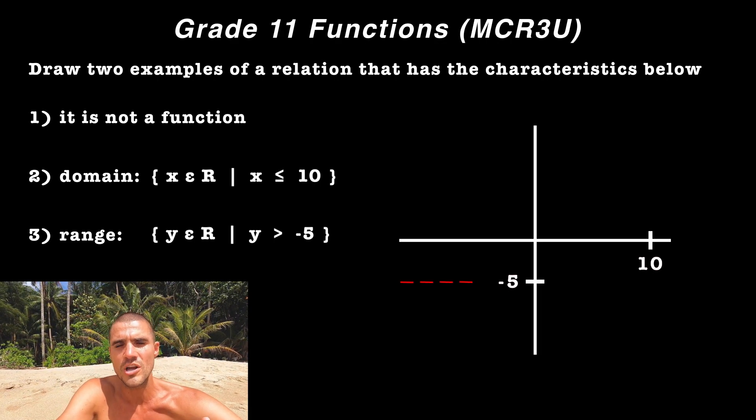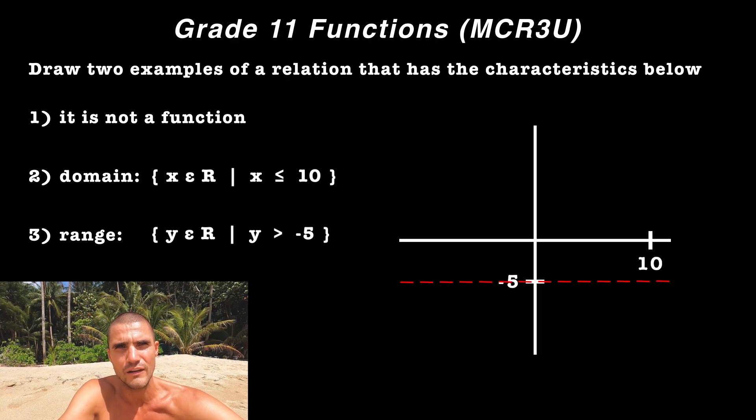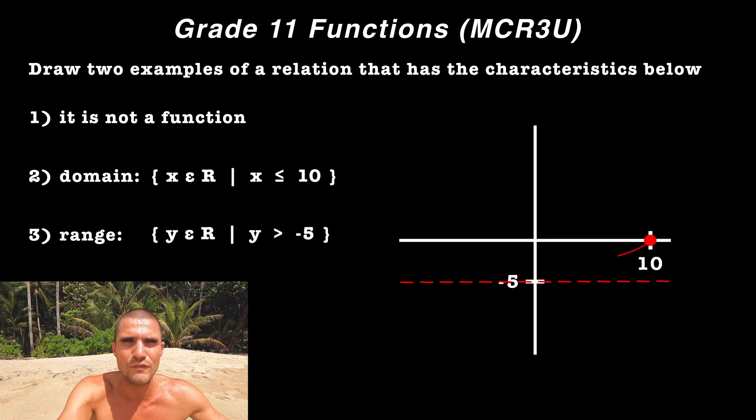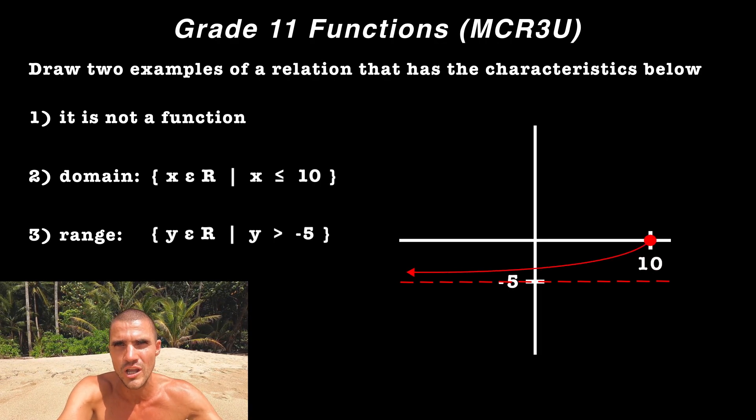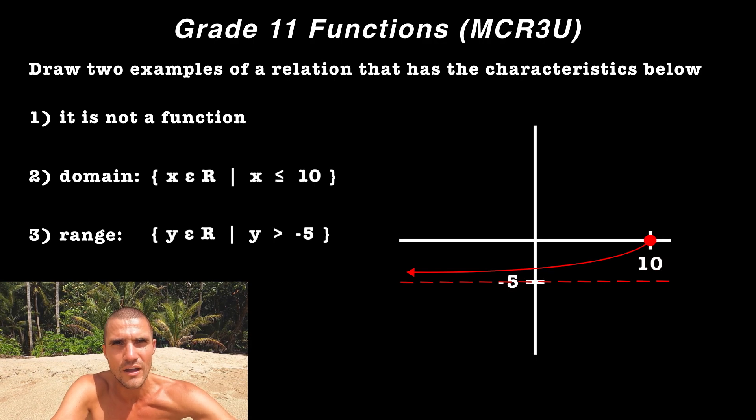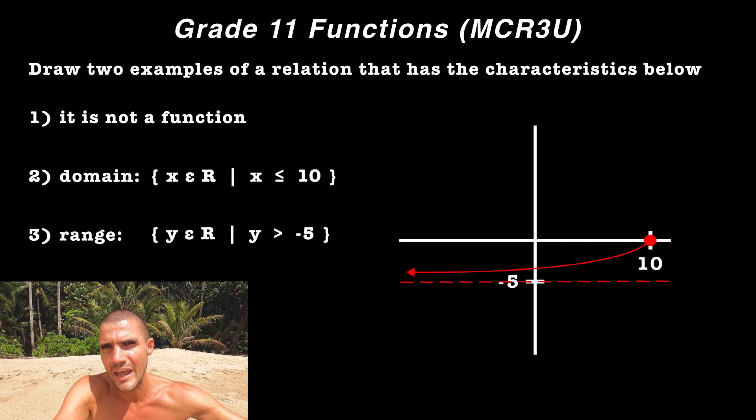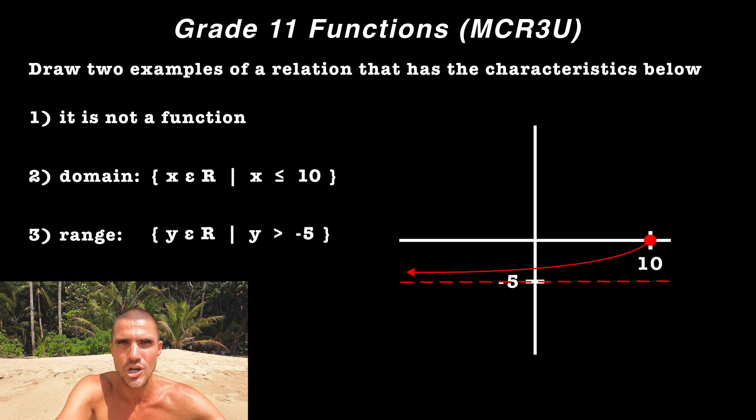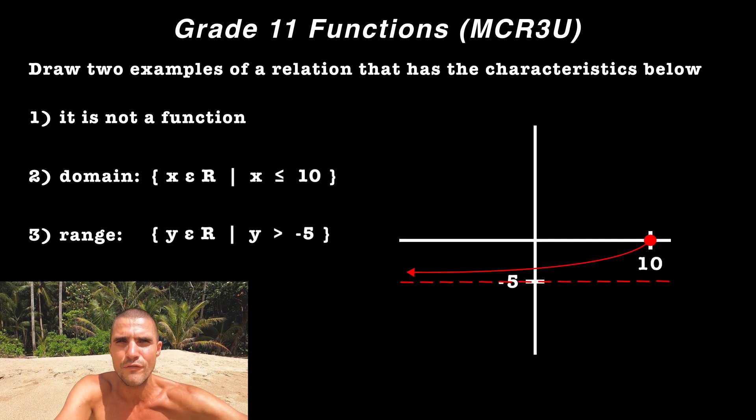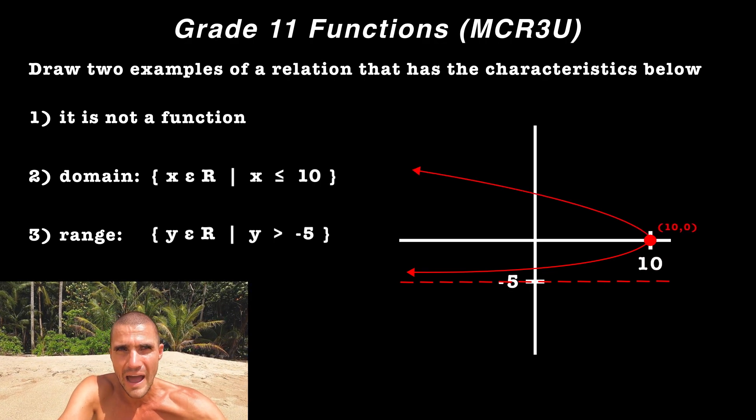Well, we could put a horizontal asymptote at that Y value of negative five. So as X goes towards negative infinity, Y is approaching that Y value of negative five, but it's never hitting that Y value of negative five because it's a horizontal asymptote there. And again, we could just keep that sideways parabola shape where it's going to have that vertex at 10 and zero, and then it's going to come back.